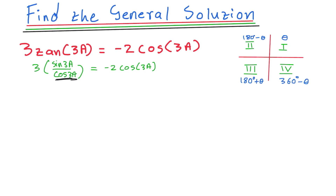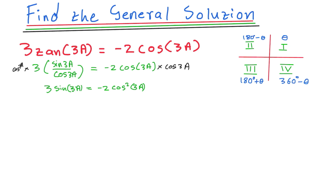Now I multiply both sides by cos(3a) to remove the denominator. Multiplying both sides by cos(3a) gives me 3sin(3a) = -2cos(3a) × cos(3a), which is -2cos²(3a).